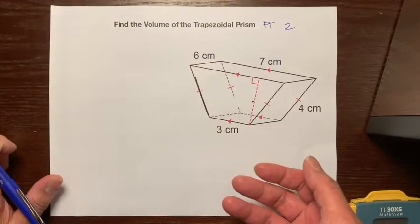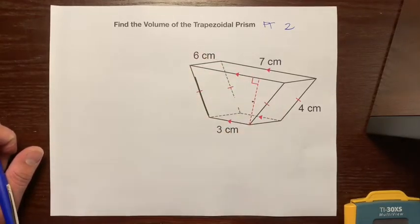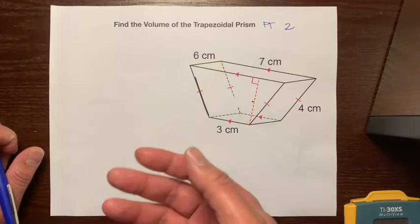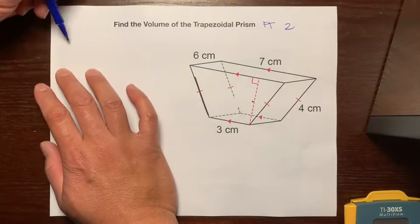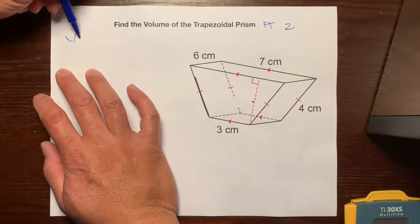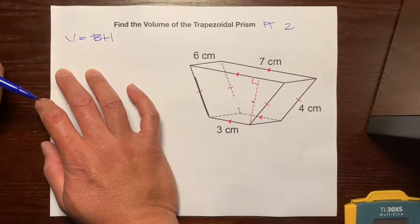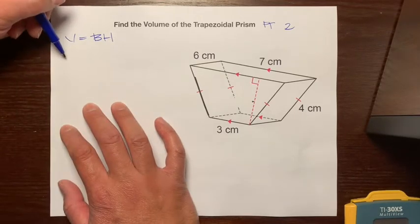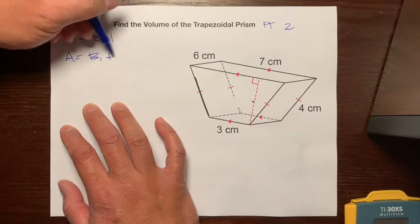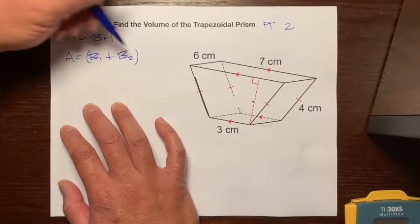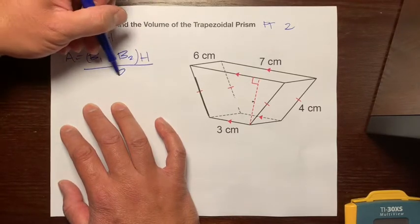I had to make another part to this because some trapezoidal prism problems may be a little more challenging. You may have extra steps, so I'm going to help you guys out. Remember, there's two formulas. If you watch part one, volume of a prism is base area times the distance between the two bases. And the formula for the area of a trapezoid is base one plus base two times the distance between the two bases in a trapezoid divided by two.